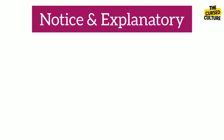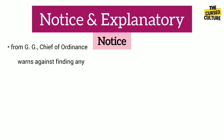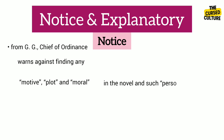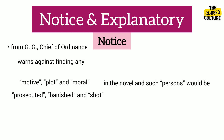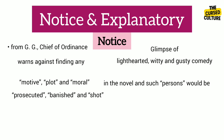The novel begins with two separate statements indicative of Mark Twain's wit. The first is the notice from G.G., the chief of ordinance, who warns against finding any motive, plot, and moral in the novel, and such persons would be prosecuted, banished, and shot. Thus, the notice is a glimpse of the light-hearted, witty, and gusty comedy to follow within the novel.